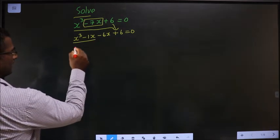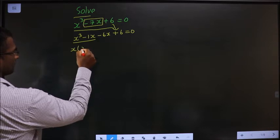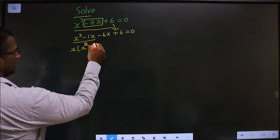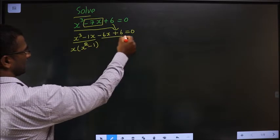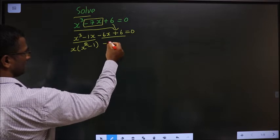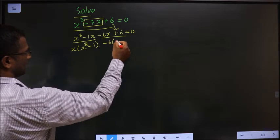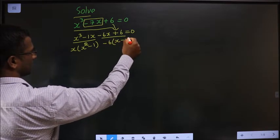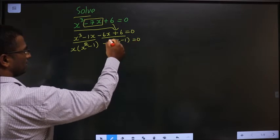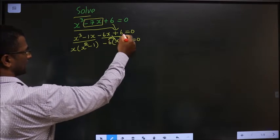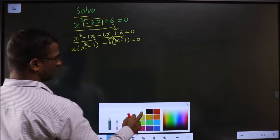Next, from these two what can I take common? X. So here I am left with x square minus 1. From these two I can take minus 6 common, so I get x minus 1. If in doubt you can multiply and see.